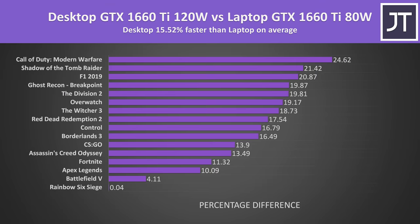These are the differences when looking at all 16 games tested. On average the desktop GTX 1660 Ti was around 15.5% faster when compared to the laptop GTX 1660 Ti. It really depends on the game — some like Rainbow Six Siege saw essentially no difference, while others scored more than 20% higher.